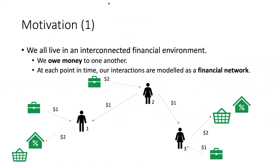In a financial network, a node is an entity such as a person or a store, and an edge represents a liability from one entity to another. For instance, in the slide we have three nodes: node one gets one dollar from one side of the network such as being paid rent or a salary, and owes two dollars to the outside network for example for rent and groceries. Node two gets two dollars from work and owes one dollar to node one and one dollar to node three. Node three gets one dollar from working and has two dollars of obligations in groceries and rent.